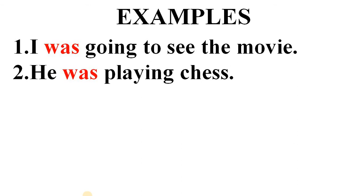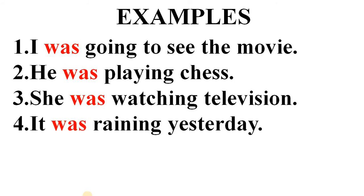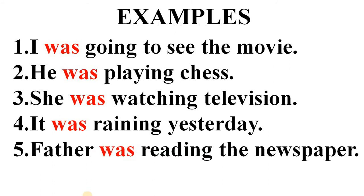Because 'he' is singular. Third: She was watching television — here we are using 'was' with 'she' because she is singular. Fourth: It was raining yesterday — with 'it', we are using 'was'. Fifth: Father was reading the newspaper — we are talking about only one person, so we are using 'was' with 'father'.